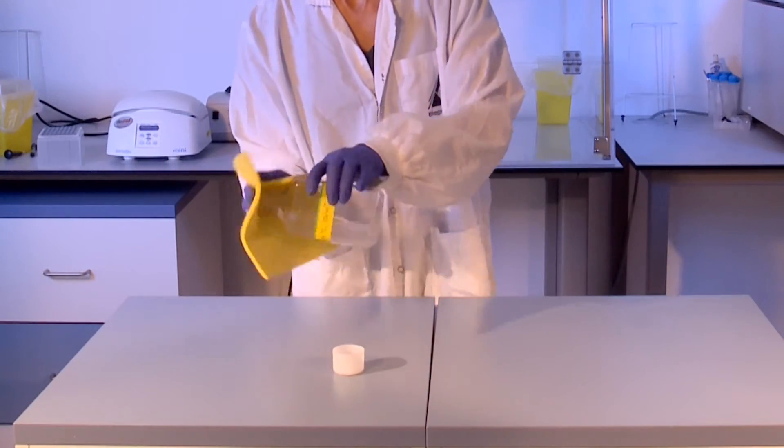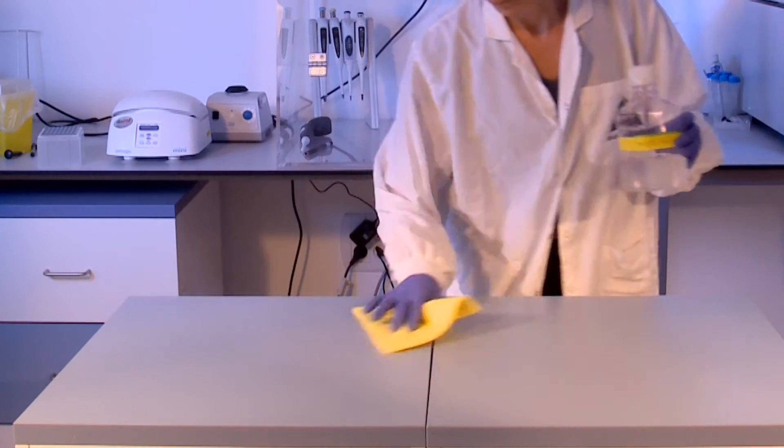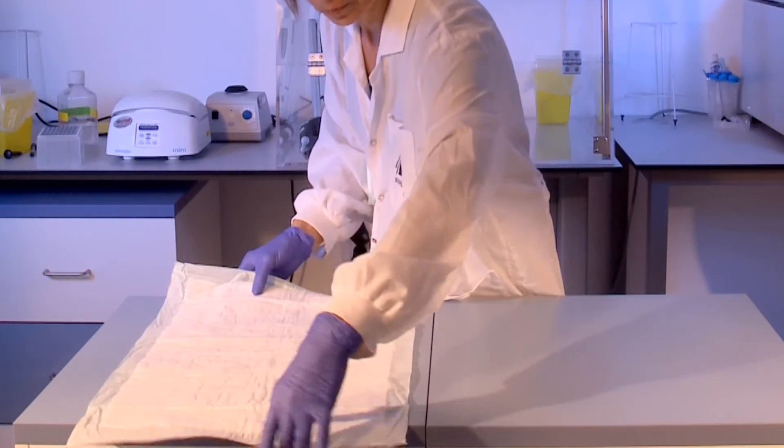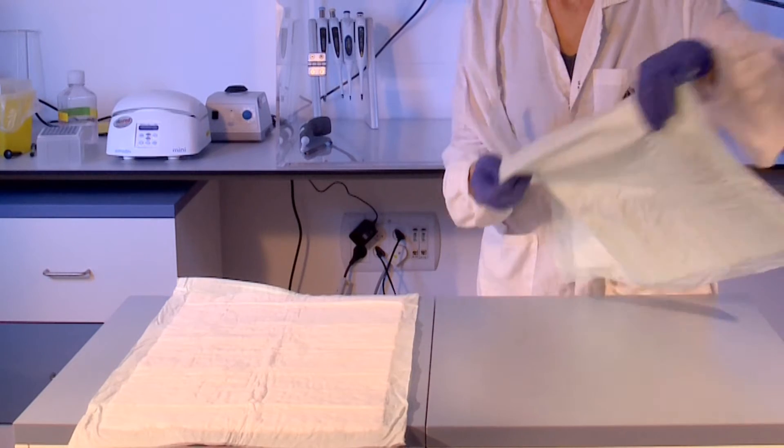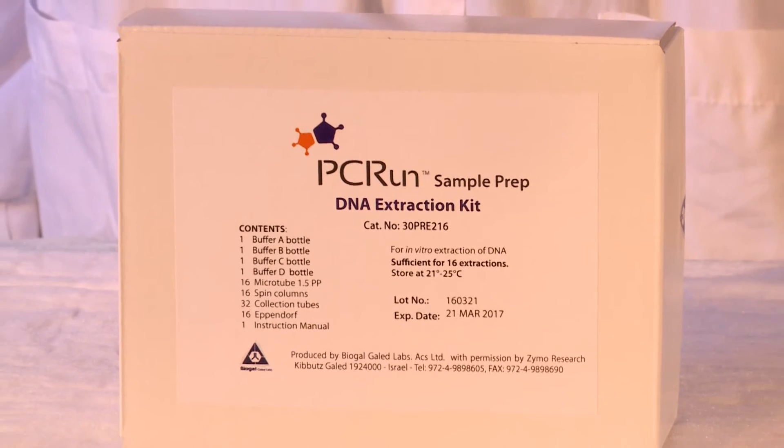Prior to performing the PCRun procedures, a suitable work area which has been decontaminated with diluted commercial household bleach must be prepared. Once the clean area is ready, you can begin with the DNA extraction step utilizing a sample collected from the patient.